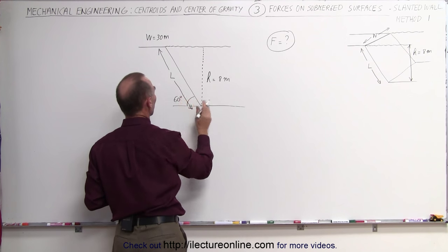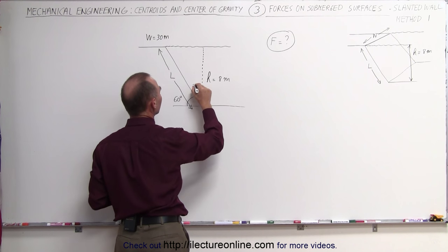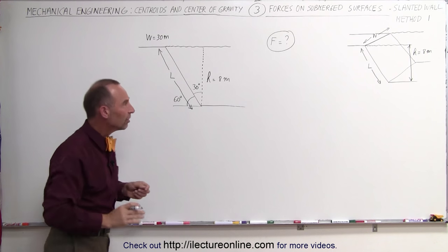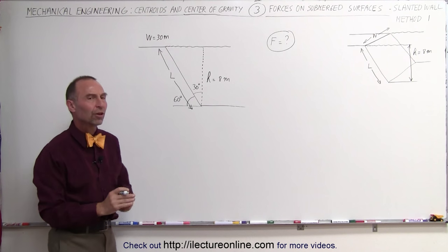60 degrees with the horizontal or an angle of 30 degrees with the vertical. So what is the total force on the slanted portion of the dam like that?